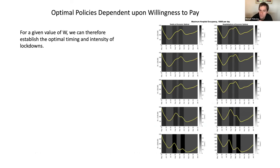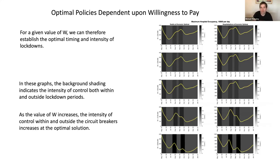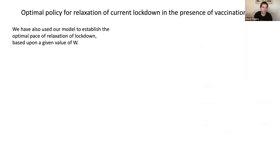For a given value of willingness to pay, we can establish the optimal timing and intensity of these lockdowns. Going from top to bottom shows different values of willingness to pay — from £20,000 per QALY loss avoided up to £200,000. The background shading shows the intensity of the control policy both within and outside lockdown periods. Unsurprisingly, as you go from top to bottom, things get darker — the more money you're willing to spend, the more serious control policies you recommend.